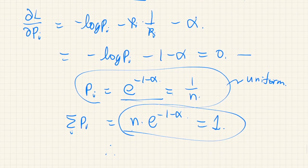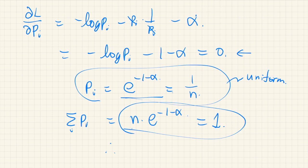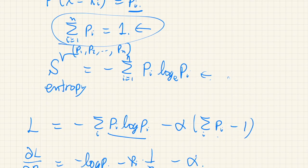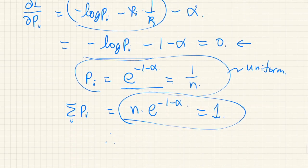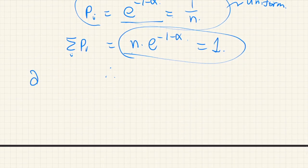From the first derivative being equal to zero we can only say this point is a stationary point — either a local maximum or local minimum. To confirm it's a maximum, we differentiate the entropy twice. Differentiating once gives us the first-order term, and differentiating again gives us the Hessian matrix.